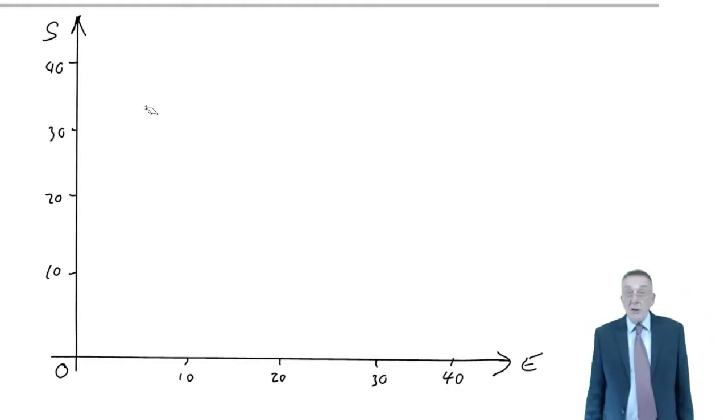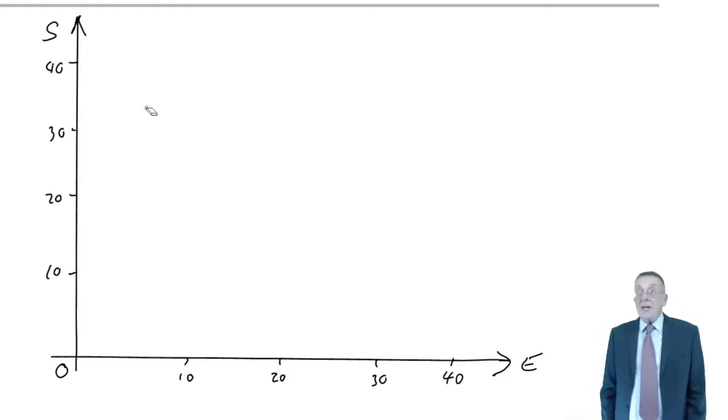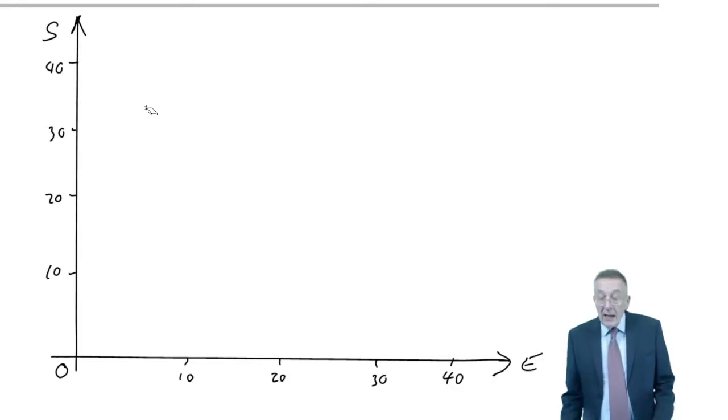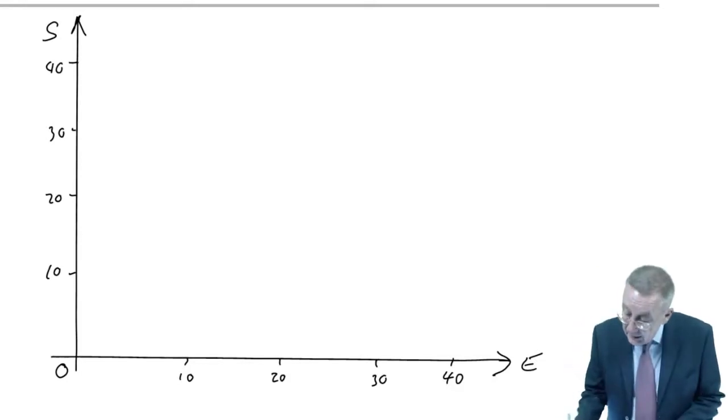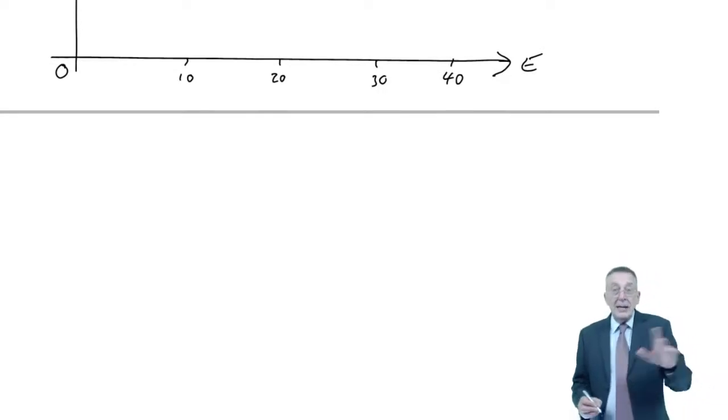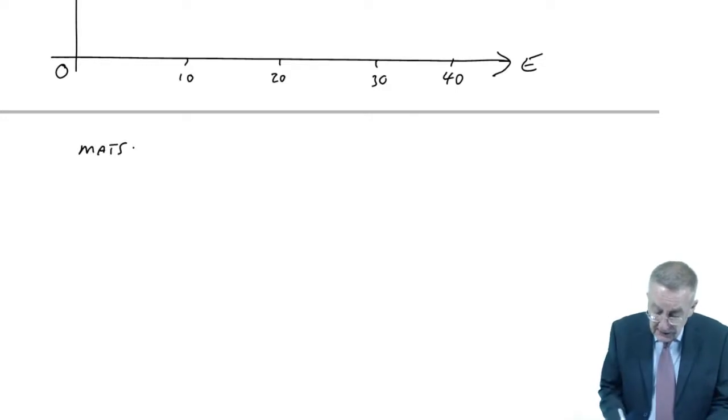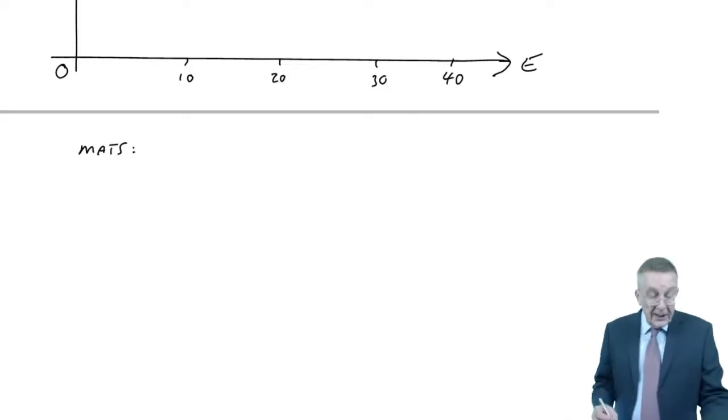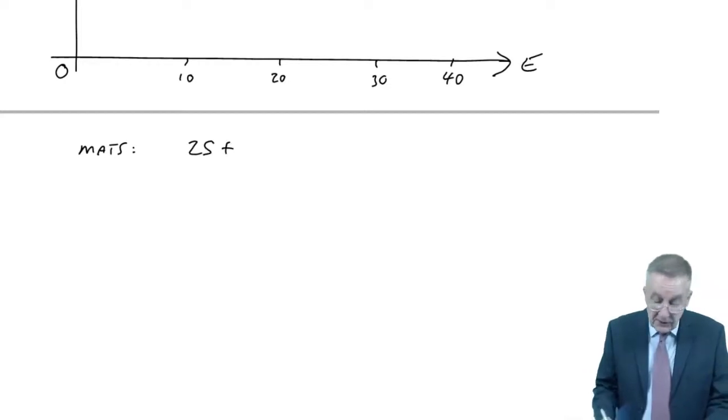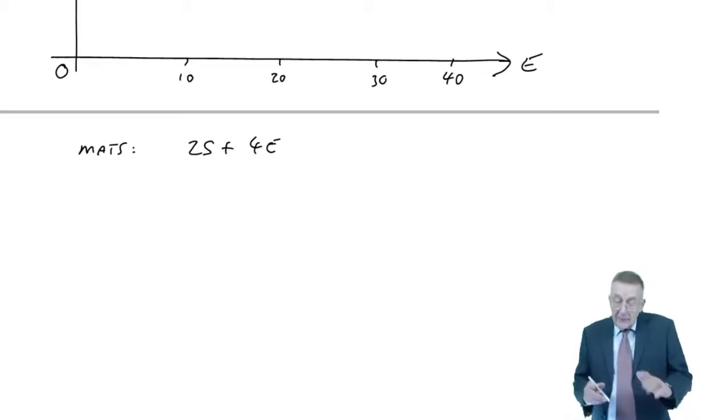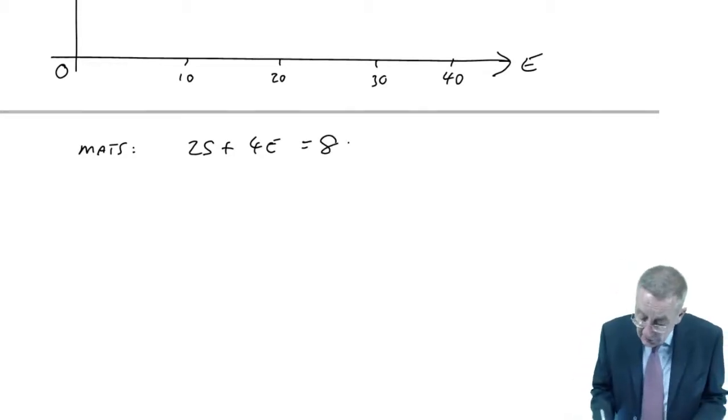Well, the first thing we're going to do is put the constraints on a graph, because clearly there's a limit, or several limits, as to how many we're able to end up producing. And what do you want to do? First of all, we take the inequalities we wrote down, but write them as equations. What I mean is, the first one we had was materials. And what was it? It was 2S plus 4E. It was less than 80. Well, let's write it as equals for a minute.